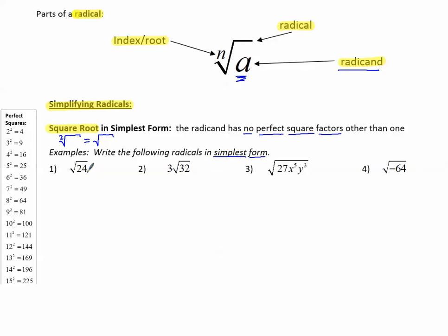Number one: square root of 24. It's important to remember your perfect squares. In the margin, we have a list: 2 squared is 4, 3 squared is 9, 4 squared is 16, 5 times 5 is 25, 6 times 6 is 36, and so on. These numbers obtained by squaring each integer are the perfect squares we want memorized.